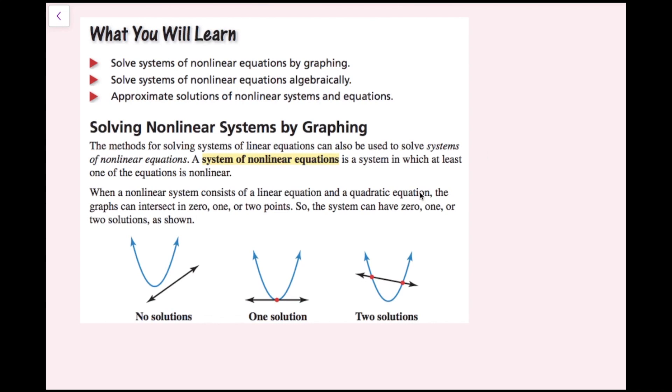The no solution case is if they don't intersect, the one solution case is if they intersect at one point, and the two solutions case is if they intersect at two points.